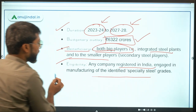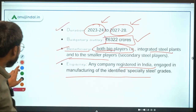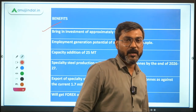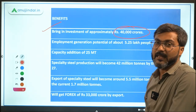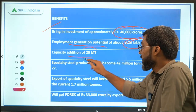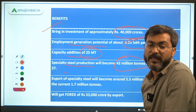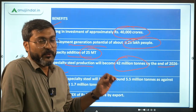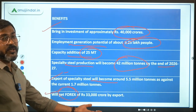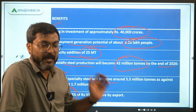Any company registered in India engaged in manufacturing of identified speciality steel is eligible to benefit under this scheme. The scheme will bring in investment of around 40,000 crores, employment generation for about 5.25 lakh people, capacity addition of 25 million tons of speciality steel, and production will become 42 million tons by the end of 2026-27. Export of speciality steel will increase and generate forex earnings of rupees 33,000 crores. These are the expected targets.